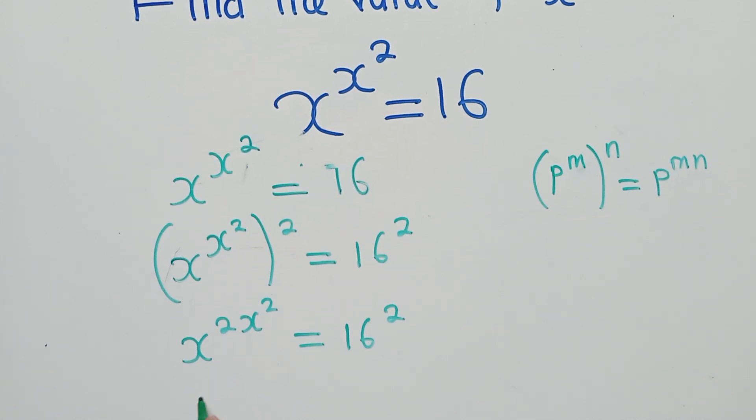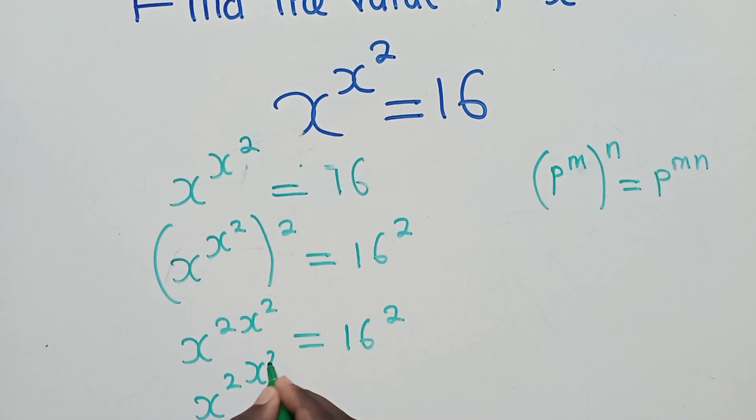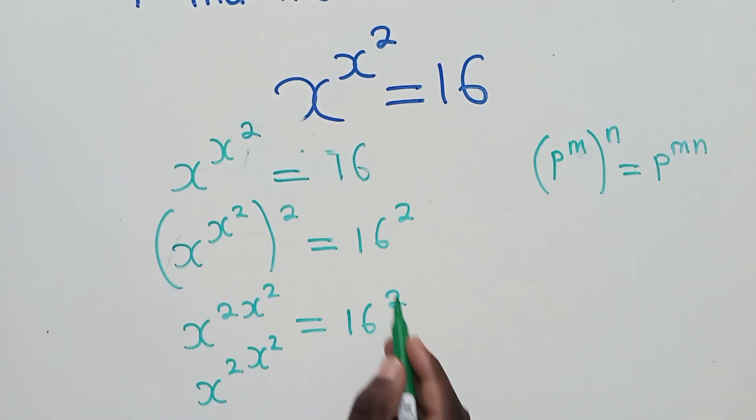The next thing from here will be to try and work out this side so that we have x^(2x^2) here and x^(2x^2) here, so try and make a certain number raised to a certain number.